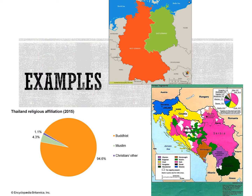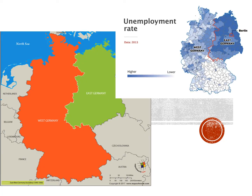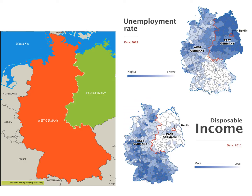Forces that unify people are centripetal and forces that divide them are centrifugal. But many political geographers argue this can be too simplistic — we cannot simply identify a given event and define it as one or the other. For example, the 1989 reunification of Germany was widely perceived as a powerful centripetal force, but the challenges of bridging the social and economic divide between East and West Germans later revealed significant centrifugal forces that came from reunification.